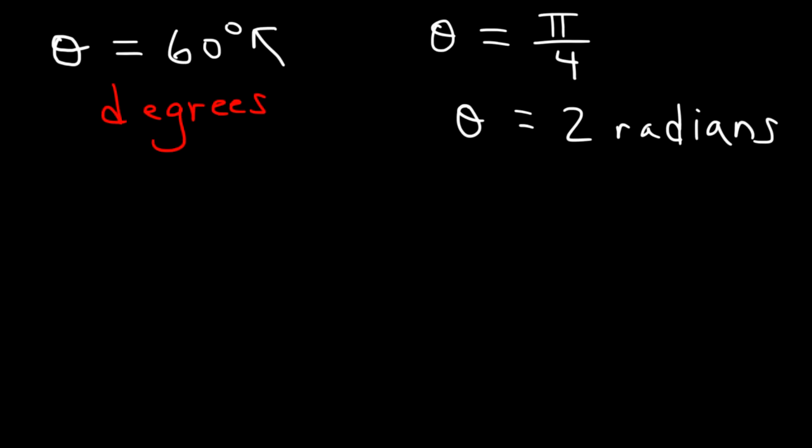What is a radian exactly? A radian is the measure of the central angle of a circle where the arc length is equal to the radius of the circle. Let's draw a circle.